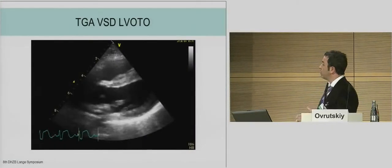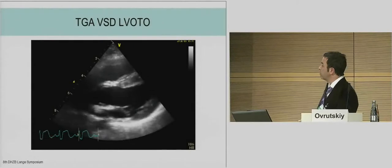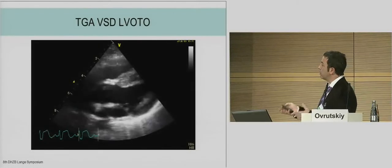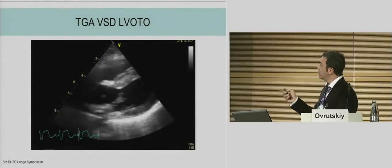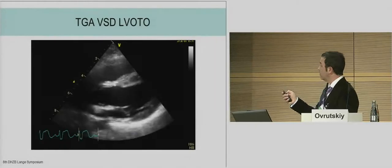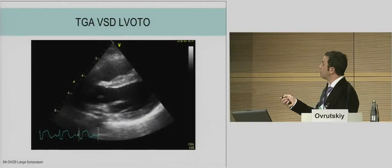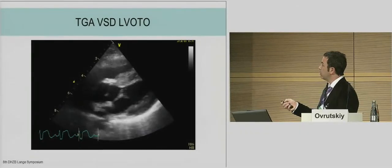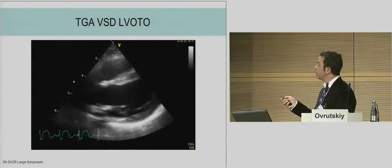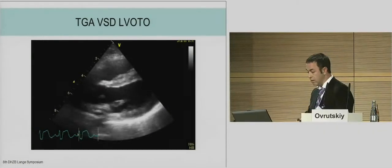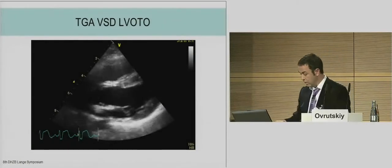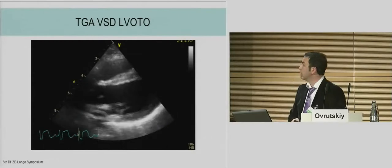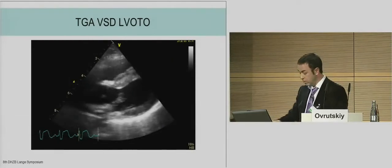After the decision-making for aortic root translocation, we await this result. You can see here the VSD is closed, the aortic valve is in the correct position, and there is excellent function of the left ventricle. Dr. Hubler will explain how this is possible.